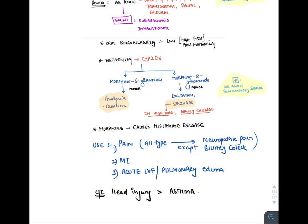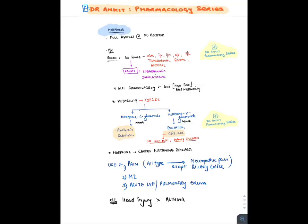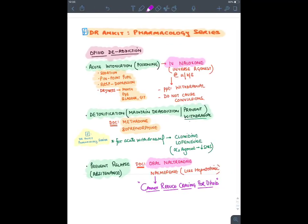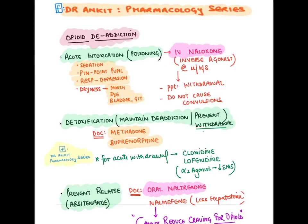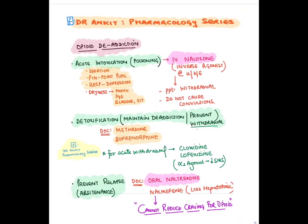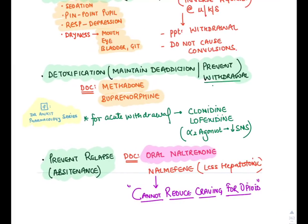Opioids are given for all types of pain except neuropathic pain and biliary colic. Morphine is the drug of choice for MI (cardioprotective) and for acute left ventricular failure/pulmonary edema. Morphine and opioids are absolutely contraindicated in head injury — they increase intracranial tension through CO2 accumulation due to respiratory depression. Asthma is a relative contraindication. In acute opioid poisoning: sedation, pinpoint pupil, respiratory depression — drug of choice is IV naloxone (inverse agonist).